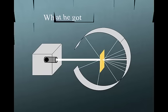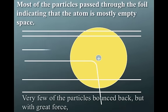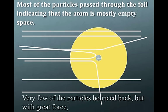Let's kind of take a look and see what's going on at the molecular level. Most of the particles pass through the foil indicating the atom is mostly empty space. And we now have one atom here. Very few of the particles bounced back, but when they did, they bounced back with great force, or were deflected with great force.